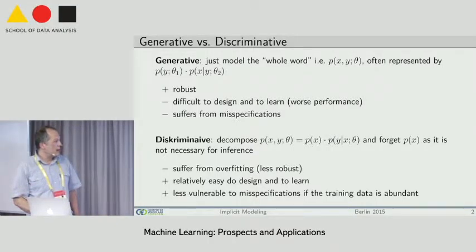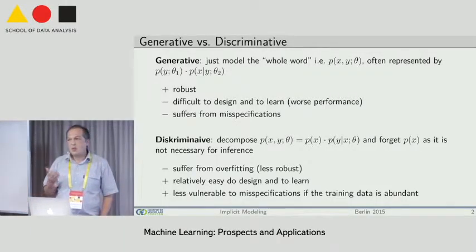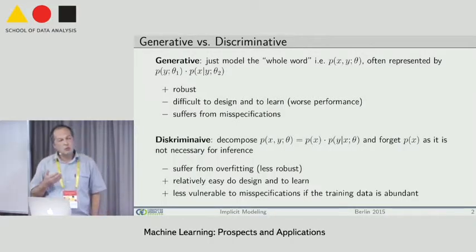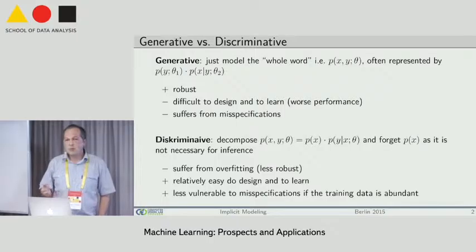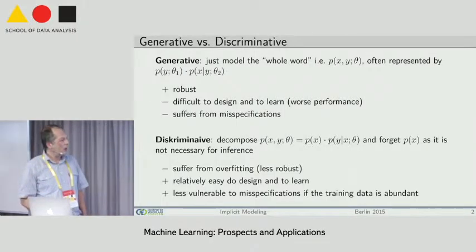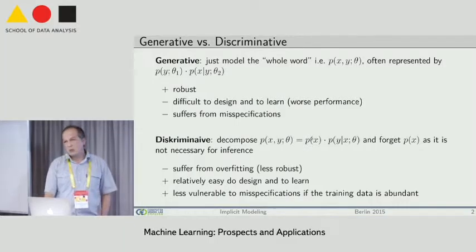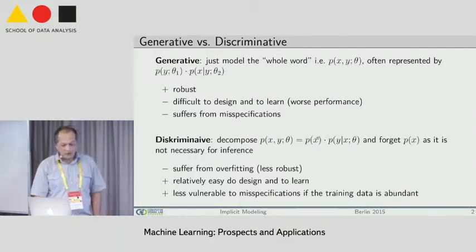The aim is to design some approach that is something in between — neither generative nor discriminative. It means we would not like to model the whole world and assign a probability value for each elementary event, but we would not like to completely forget about p of x either, in order to make the model more robust.